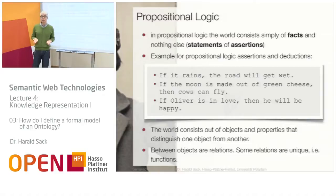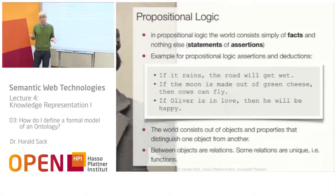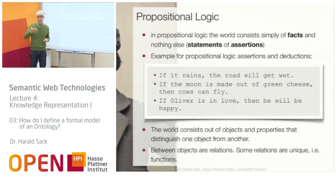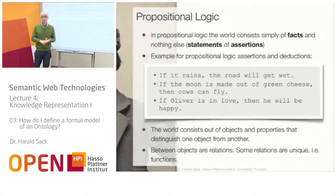The most simple kind of logic is propositional logic. In propositional logic, the world consists simply of facts — statements and assertions. For example, if it rains, the road will get wet. Or, if the moon is made out of green cheese, then cows will fly. Even if this makes no sense, it can be expressed in propositional logic.